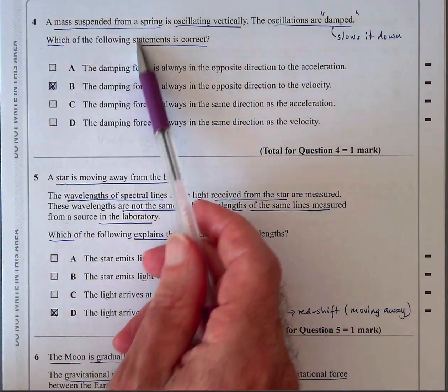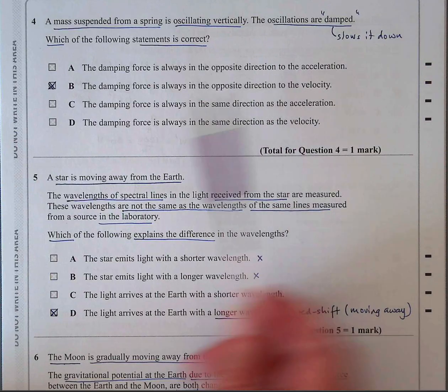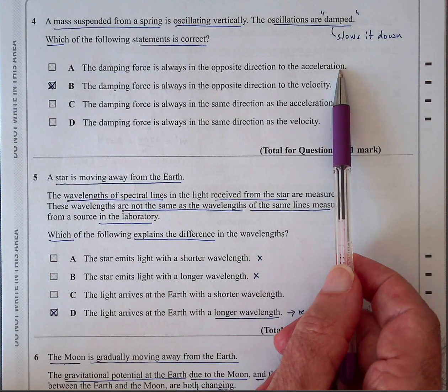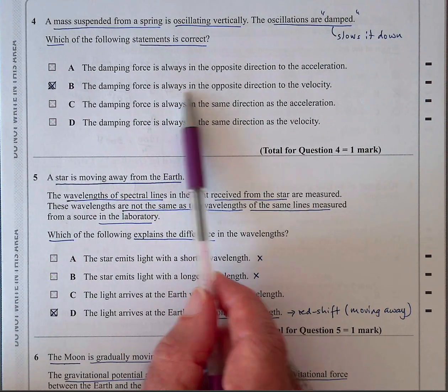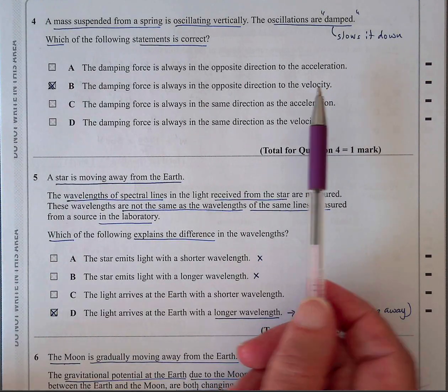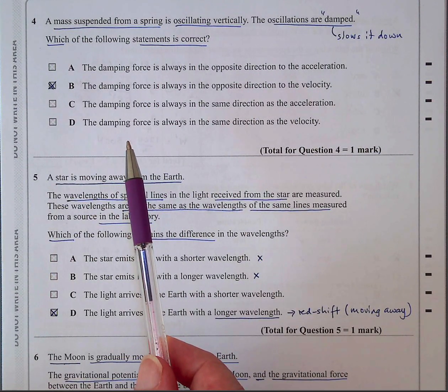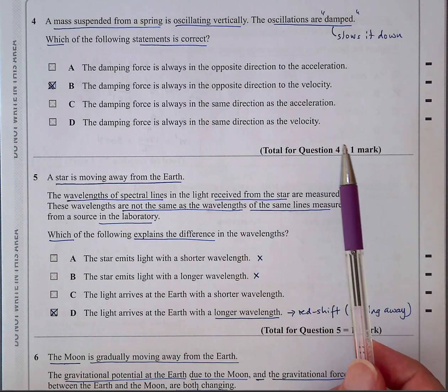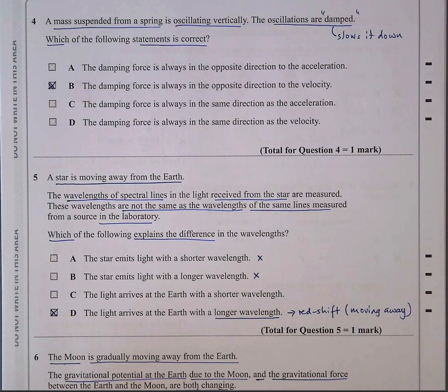Question four, a mass is suspended from a spring and it's oscillating vertically. The oscillations are damped, so that means it slows down. Which statement is correct? The damping force is always in the opposite direction to the acceleration. No, the damping force is proportional to the acceleration, but B is correct. The damping force is always in the opposite direction of the velocity because it's basically opposing the motion. So it has to be in the opposite direction to the velocity. So if it's going this way, the damping force will slow it down. And if it's going this way, it will also slow it down. And the force is always directed to the center of the oscillation. So it's trying to stop it from moving.